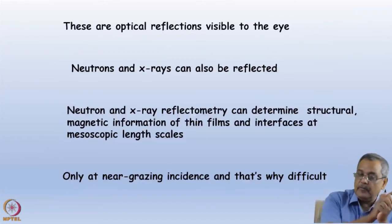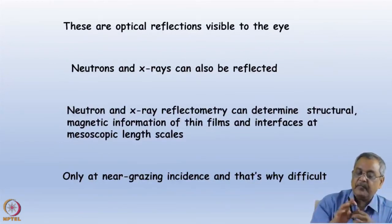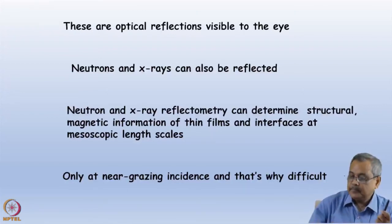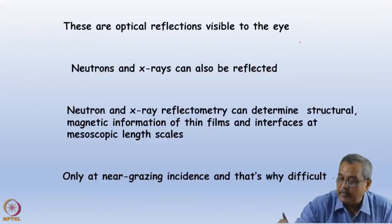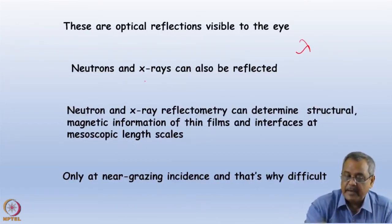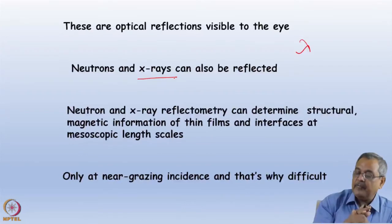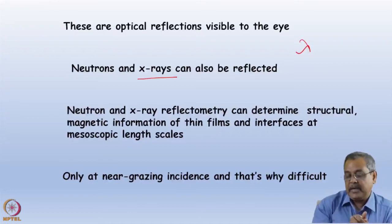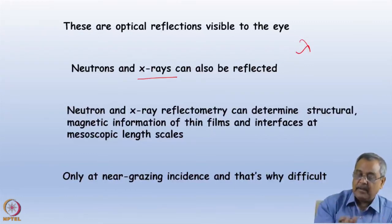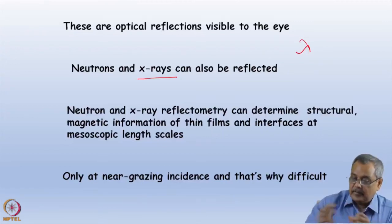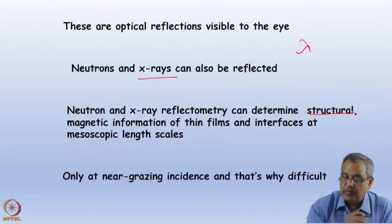But when we do neutron reflectometry — different from optical reflections visible to the naked eye — neutrons and X-rays can also be reflected, because neutrons have a de Broglie wavelength lambda and X-rays are electromagnetic waves. Both are waves, and reflection is a property of waves. Neutron and X-ray reflectometry can both determine structure of thin films and interfaces at mesoscopic length scales — and categorically, magnetic information using polarized neutron reflectometry.